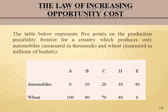Finally, if the economy is at point D, the opportunity cost of an additional 10,000 automobiles is the difference between D and E, which means 40 million bushels of wheat. We can recognize that the opportunity cost of an additional 10,000 automobiles is moving from 10 million to 20 million to 30 million to 40 million — the number is increasing. So we can say the PPF is demonstrating the law of increasing opportunity cost.